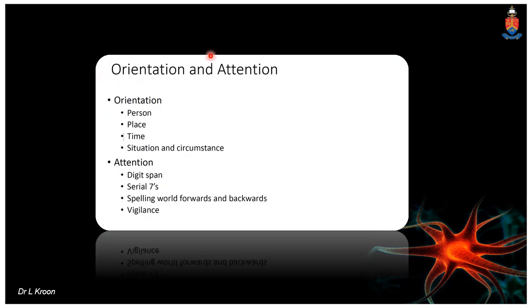This is a summary of orientation and attention. One additional test not yet mentioned is vigilance — you ask the person to tap every time you say a specific letter. For example, when going through the alphabet, every time you say 'A,' the patient must tap once. This tests sustained attentional control.